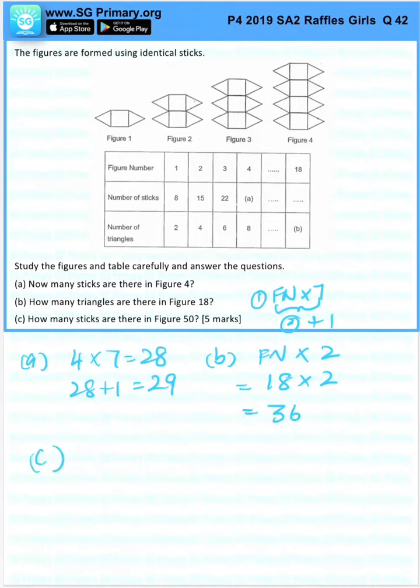C. How many sticks are there? Using the same formula for A, figure number which is 50 times 7, 350, and then this answer plus 1.